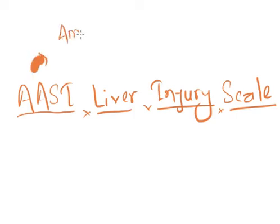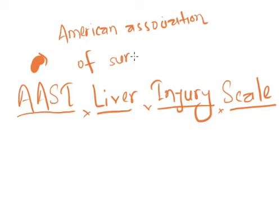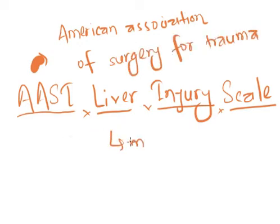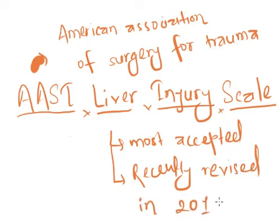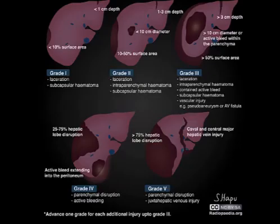Hello, today we are going to discuss the AAST liver injury scale. AAST stands for American Association of Surgeons for Trauma. It is the most accepted injury scale for liver and was recently revised in 2018.